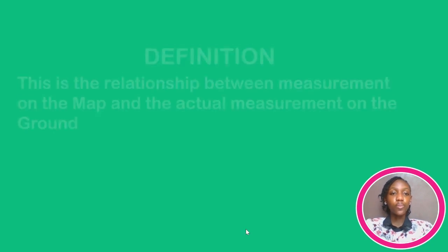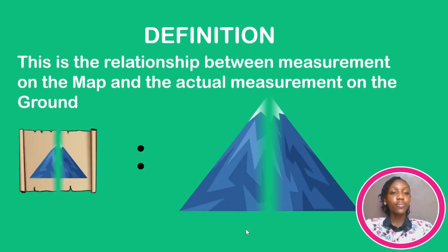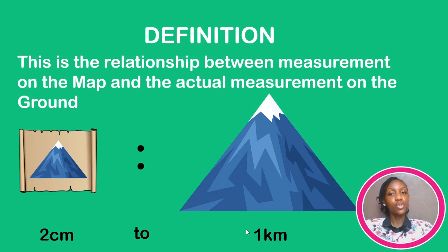Starting with the definition: MapScale is the relationship between the measurement on the map and the actual measurement on the ground. This is just a picture representation of it — two centimeters on the map to one kilometer on the ground.